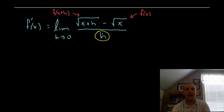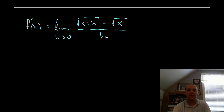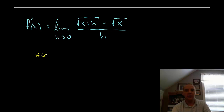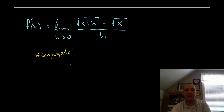We know not to give up — we're going to keep going and work on this algebraically to see if we can cancel something or rewrite something to make h go away. With a lot of square root problems, as well as some other types, what we need is something called a conjugate.